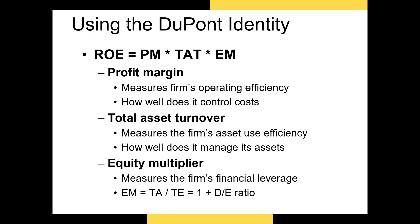The DuPont identity isolates these three areas and allows us to determine where we're underperforming. For example, if total asset turnover is high and the equity multiplier is high, yet the profit margin is low, this might indicate the firm is not controlling costs. If the profit margin is very large and the equity multiplier is also very large, yet the firm has very low total asset turnover relative to its direct competitors, this indicates the firm is inefficiently using its assets — which could indicate that management is not acting as efficiently as it should.